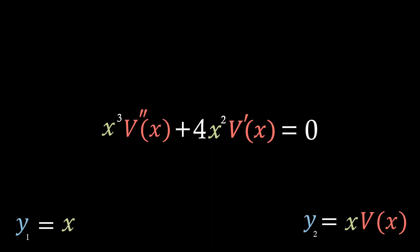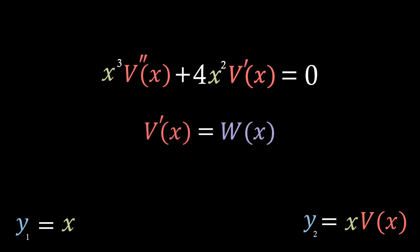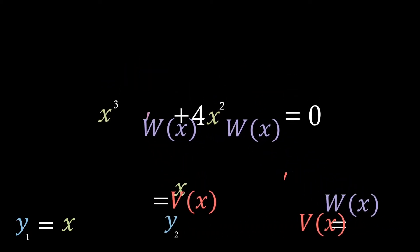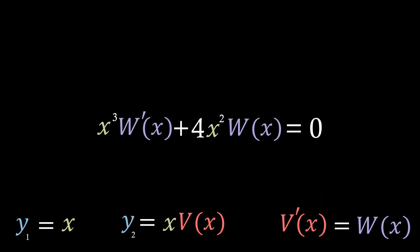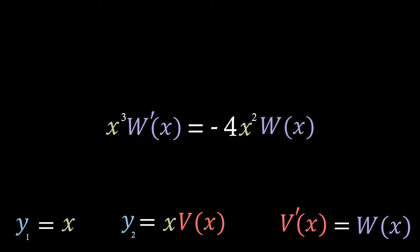This is now in the form of a linear first order differential equation. We make a sensible substitution where the differential of v of x equals w of x. Substituting this in, we get the equation x cubed times the differential of w of x plus 4x squared times w of x equals 0, which is just a homogeneous first order linear differential equation — which we looked at in the very first episode, where we covered the separation of variables method.